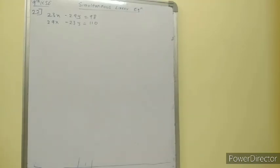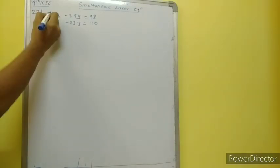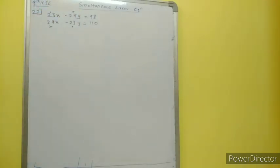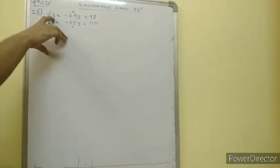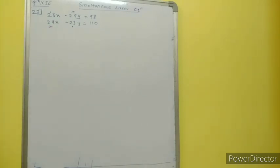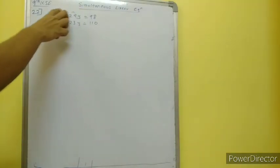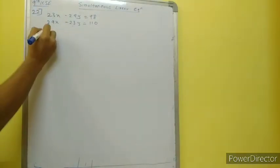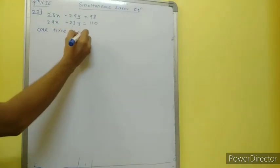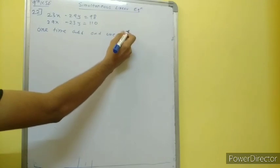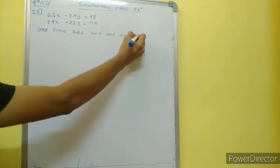Now we will start with the 22nd question. Whenever we have this type of question — we have 23 over here, then it is 29 in the next equation. Means they are interchanged with their variables: when 23 was with x, in the next equation it is with y; 29 was with y, now it is with x. Whenever coefficients are interchanged with the variable, we need to add one time and subtract one time.